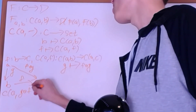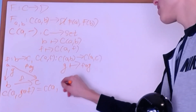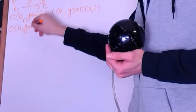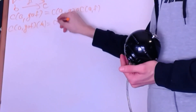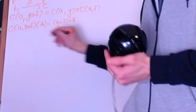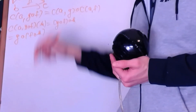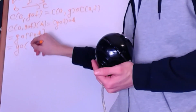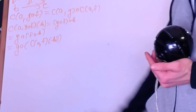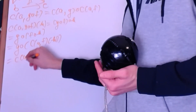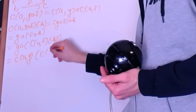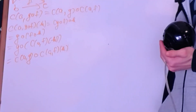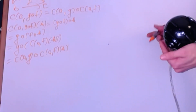To verify the Hom functor respects composition, I need to prove that C(A, g∘f) equals C(A, g) composed with C(A, f). Let's apply this to a function h. By definition this equals g∘f∘h, which by associativity equals g∘(f∘h). Now f∘h by definition is C(A, f) applied to h, and then C(A, g) applied to that entire thing equals C(A, g) ∘ C(A, f) applied to h — which by the definition of composition of functions in Set makes it abundantly clear that we do have a functor.